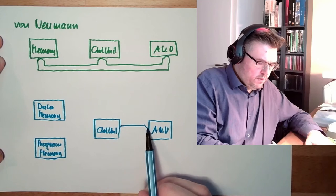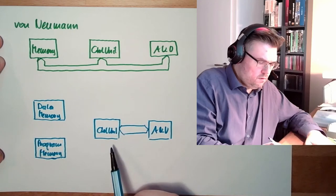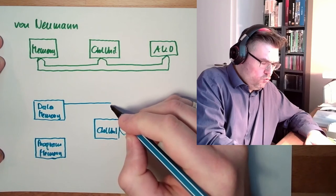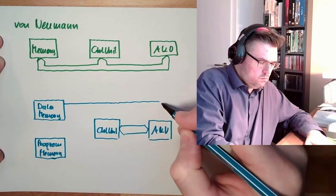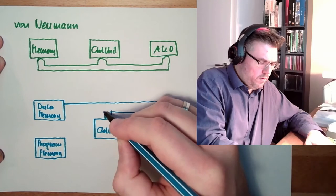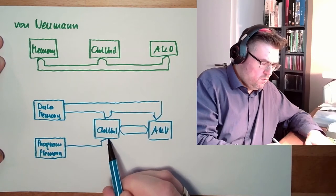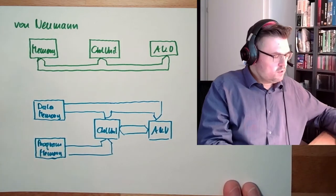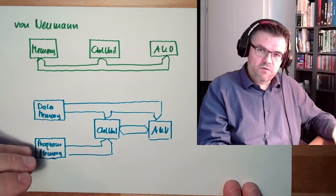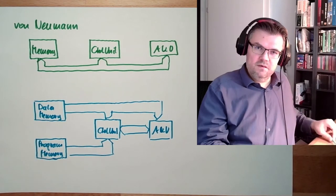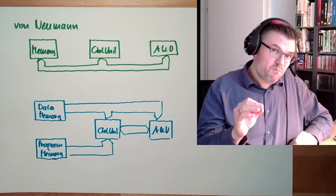They are communicating to each other, and now there are suddenly two possible ways - data memory and program memory. Suddenly the program, the instructions, do not share the bus system with the data. This has some benefits.